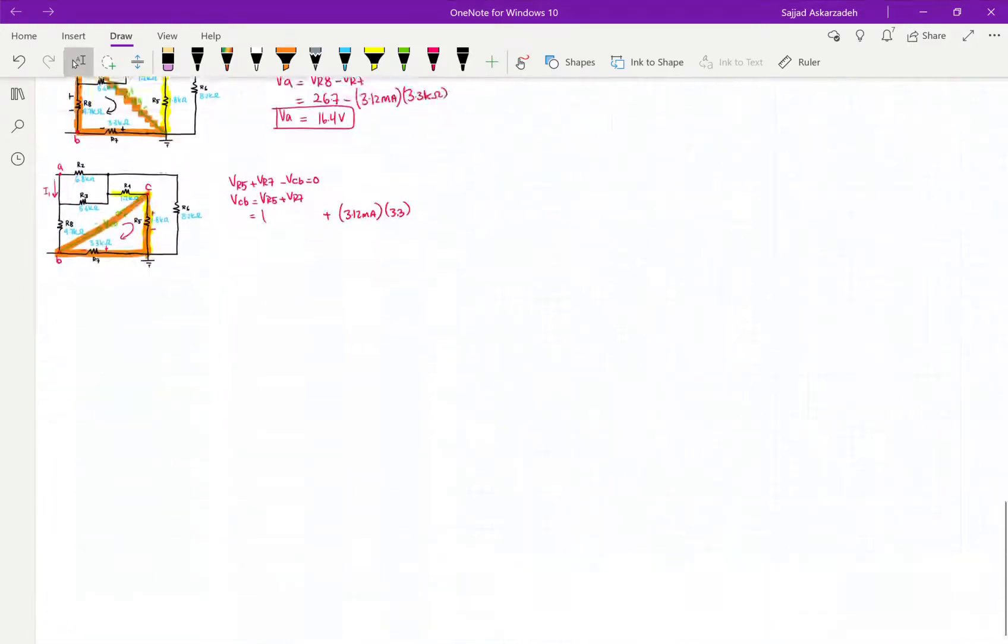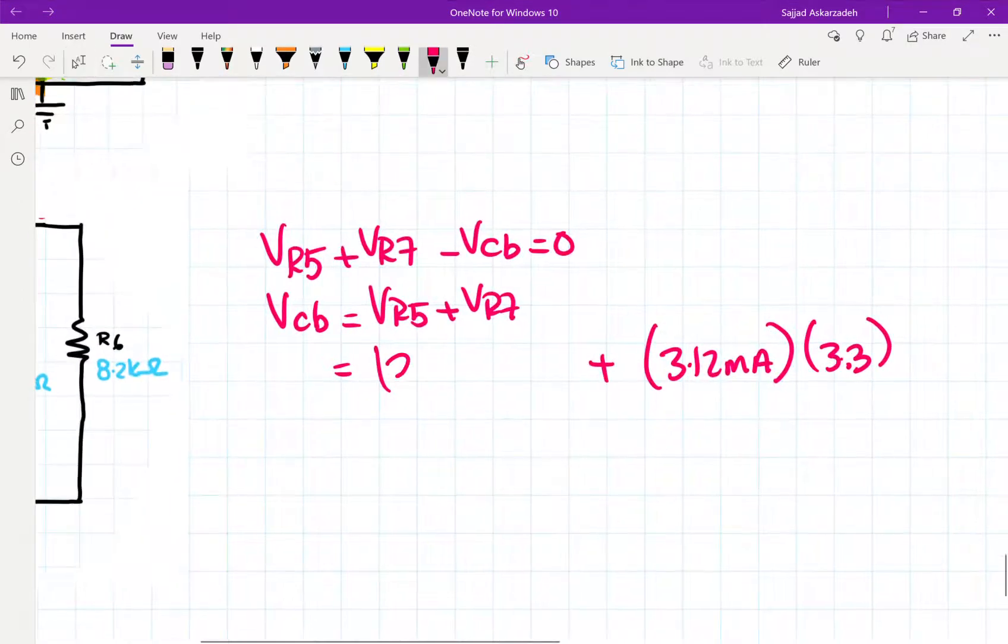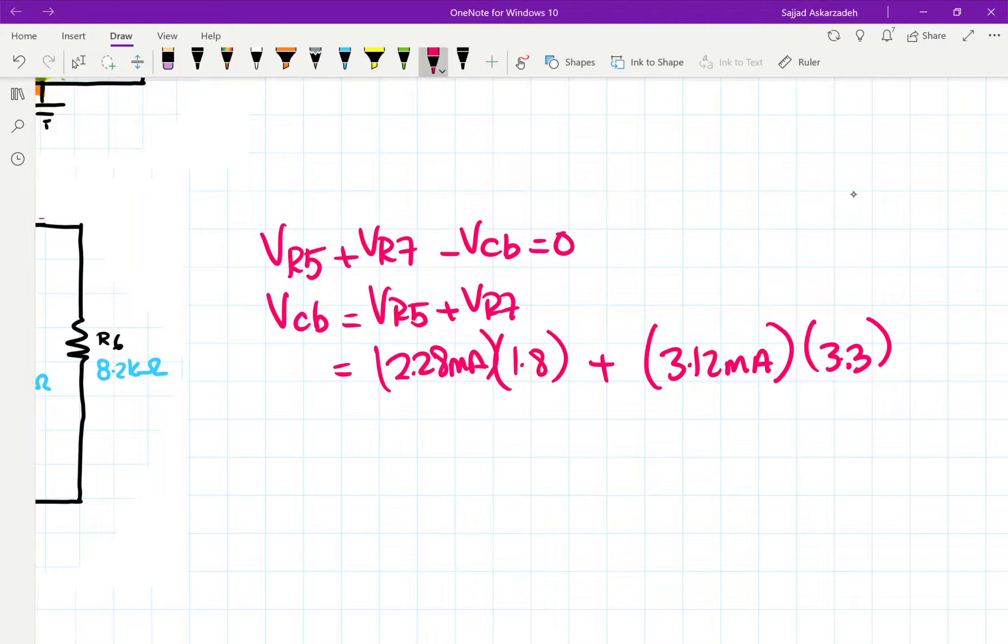So we got 2.28 milliamps multiplied by R5, which was 1.8. And if we do the calculation for this, times 1.8 plus 3.12 multiplied by 3.3, we get 14.4 volts.